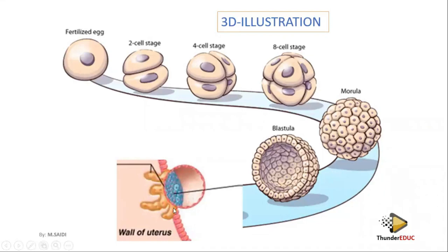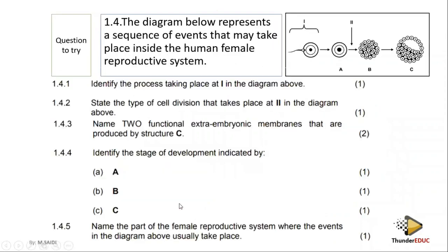The blastula forms the outer layer called the chorion, which forms finger-like projections for implantation. Now here are some exam questions. Identify the process taking place at point one in the diagram — the sperm fuses with the ovum, so the answer is fertilization. The type of cell division taking place at point two is mitosis. The functional extra-embryonic membrane formed is the chorion, and also the amnion — which we haven't covered yet.